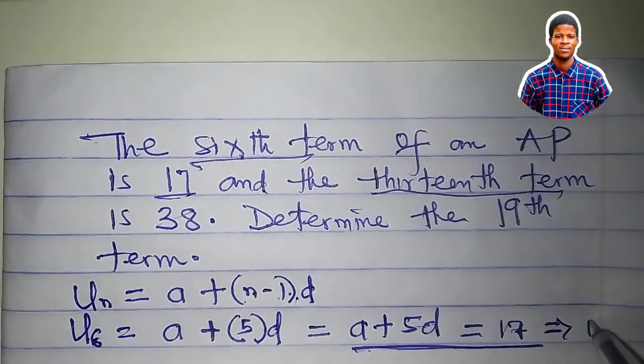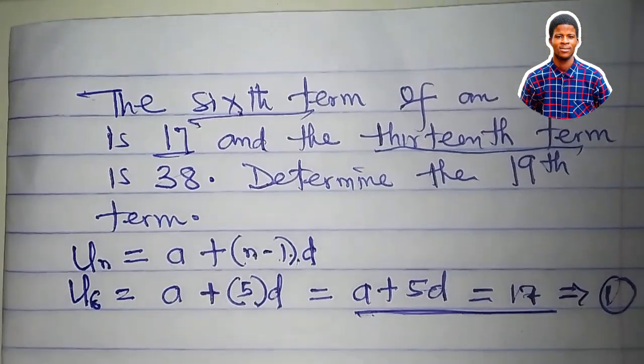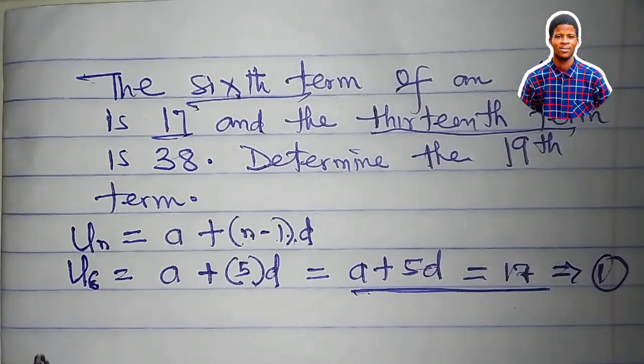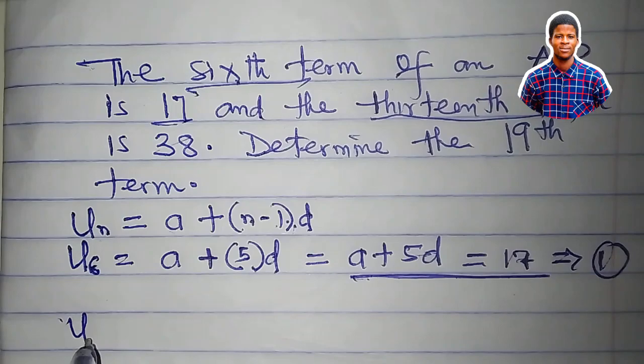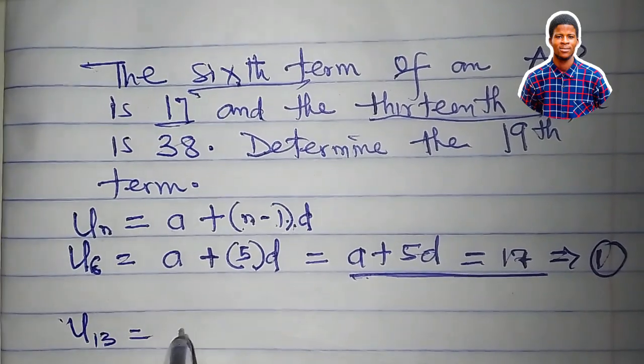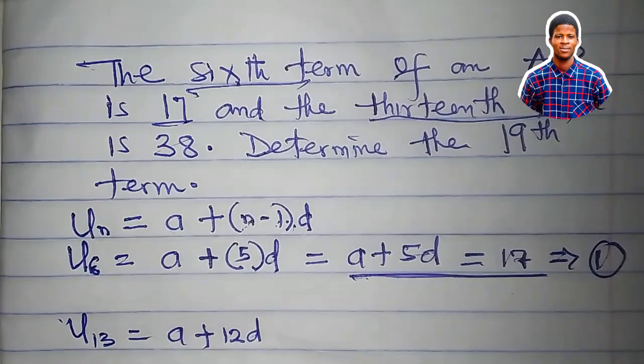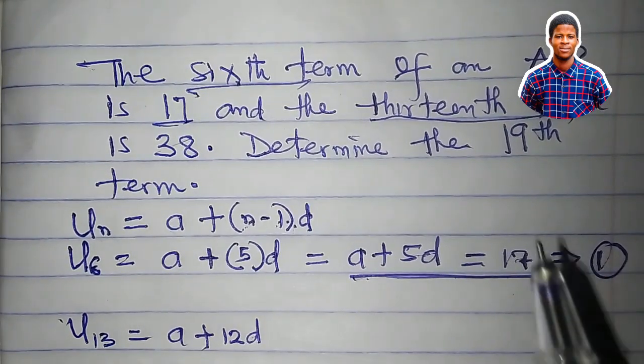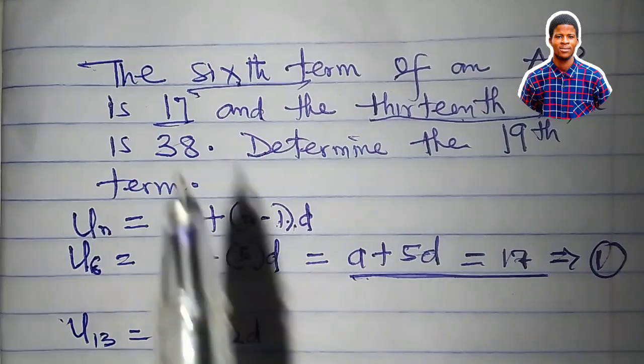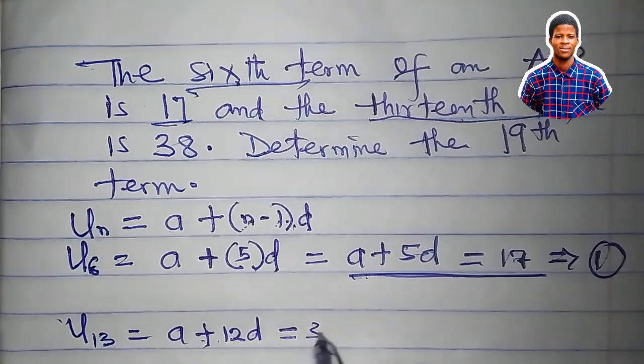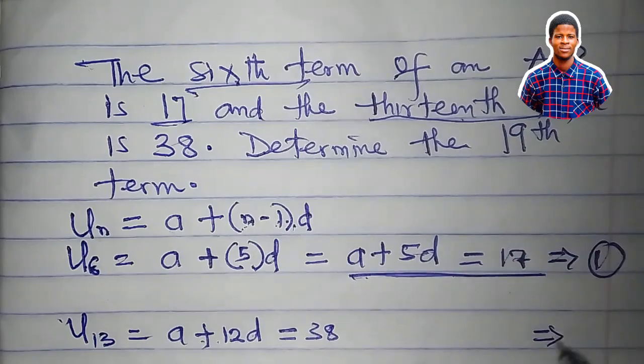Now we are given the 13th term as well. That's U sub 13 which is equal to A plus 13 minus 1, that would be 12, 12d. And this 13th term is 38. It means that A plus 12d is equal to 38. That would be my equation 2.